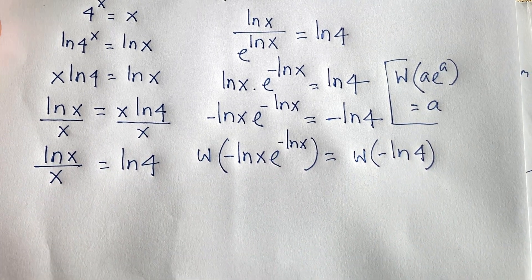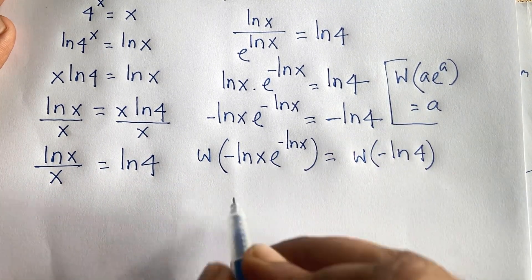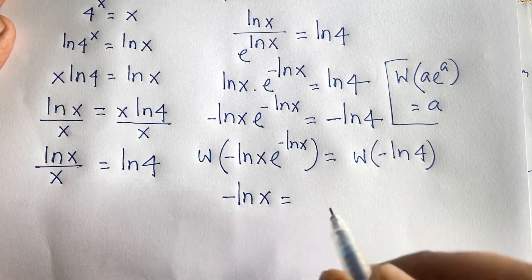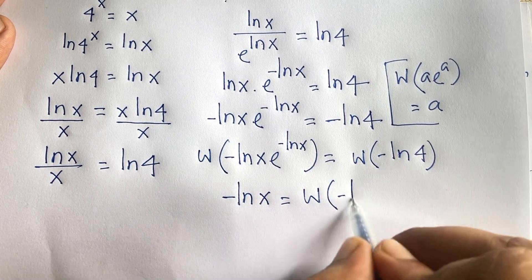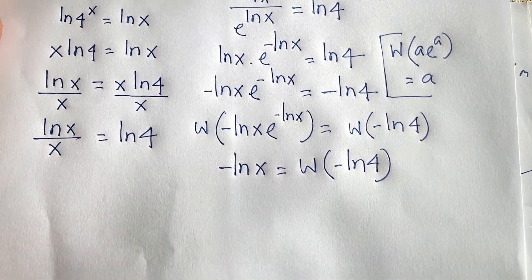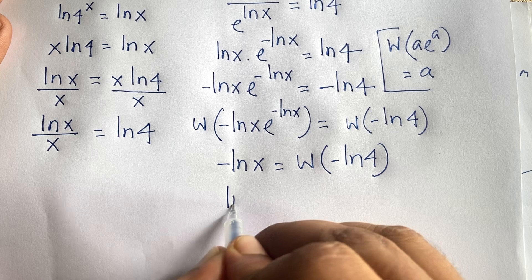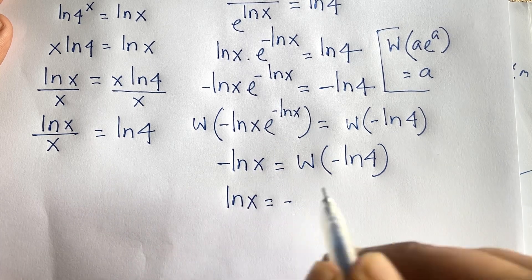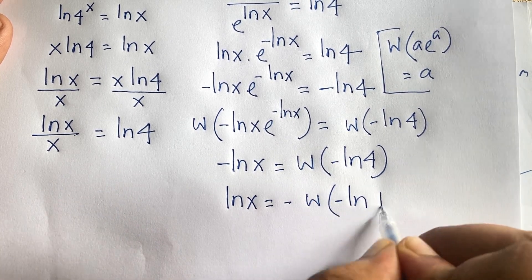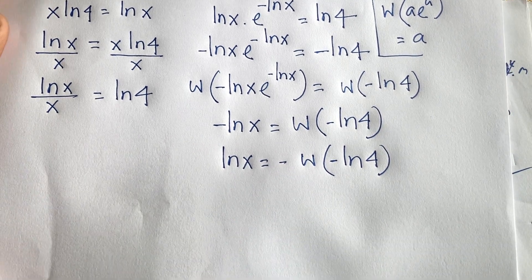According to these rules it will be: minus ln x is equal to W of minus ln 4. Now at this moment if I multiply both sides by minus one, it will be ln x is equal to minus W of minus ln 4.